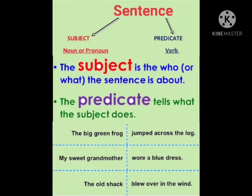And the predicate — the predicate tells what the subject does. The predicate tells us what the subject is doing in that sentence: what action the subject is performing.